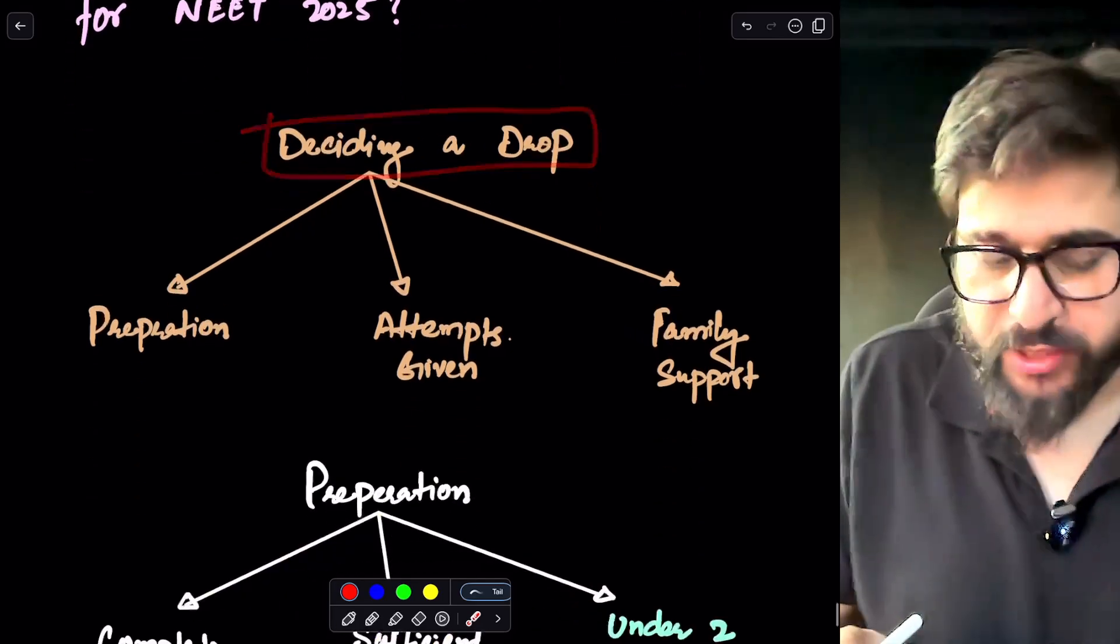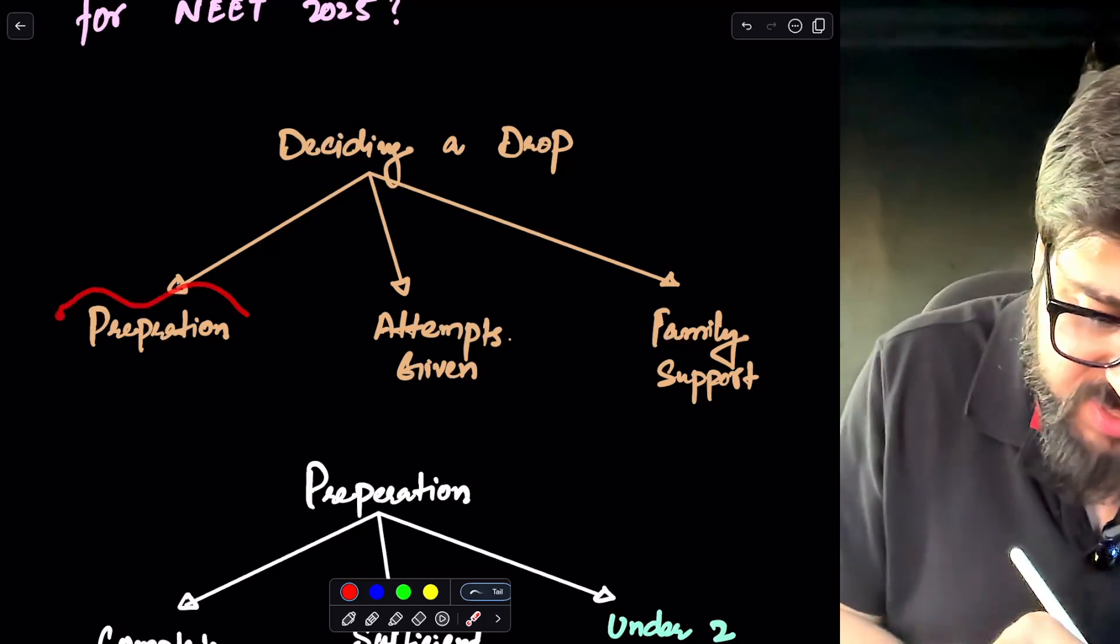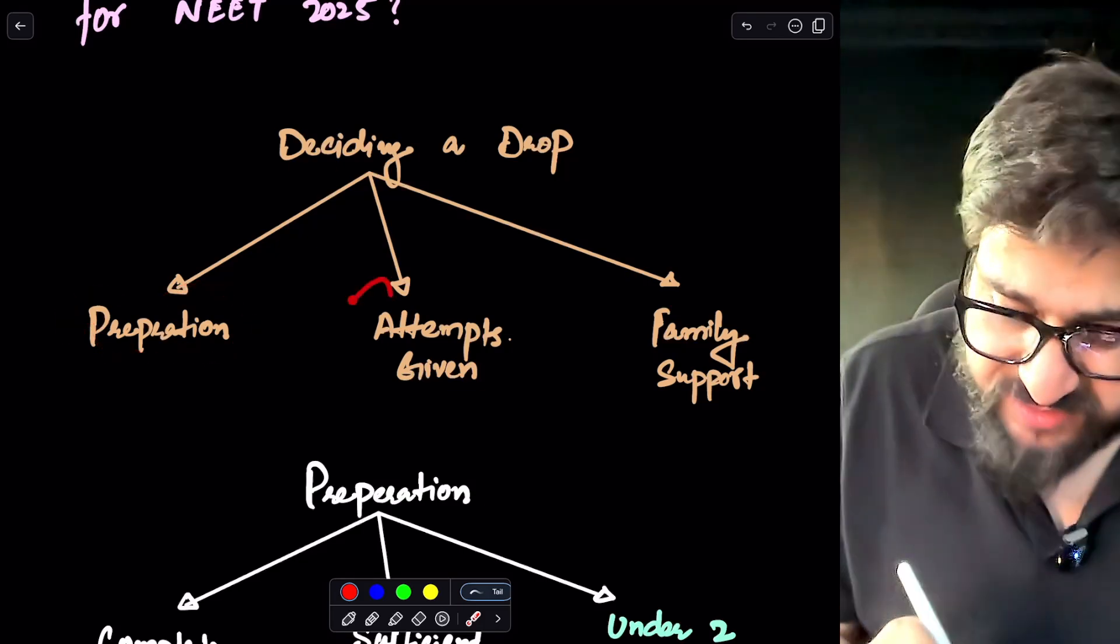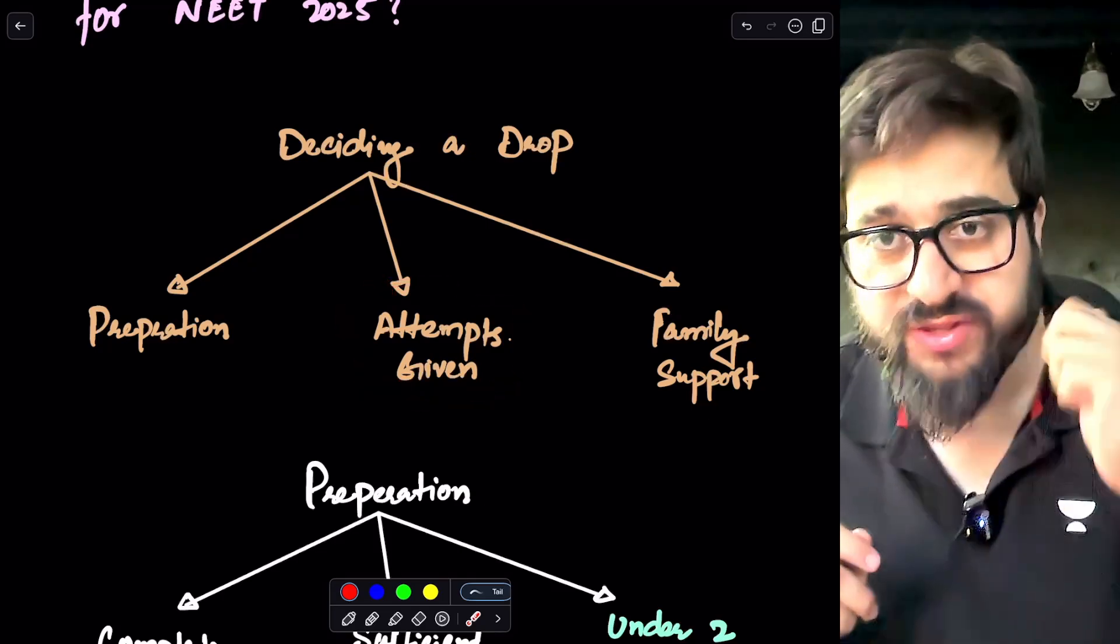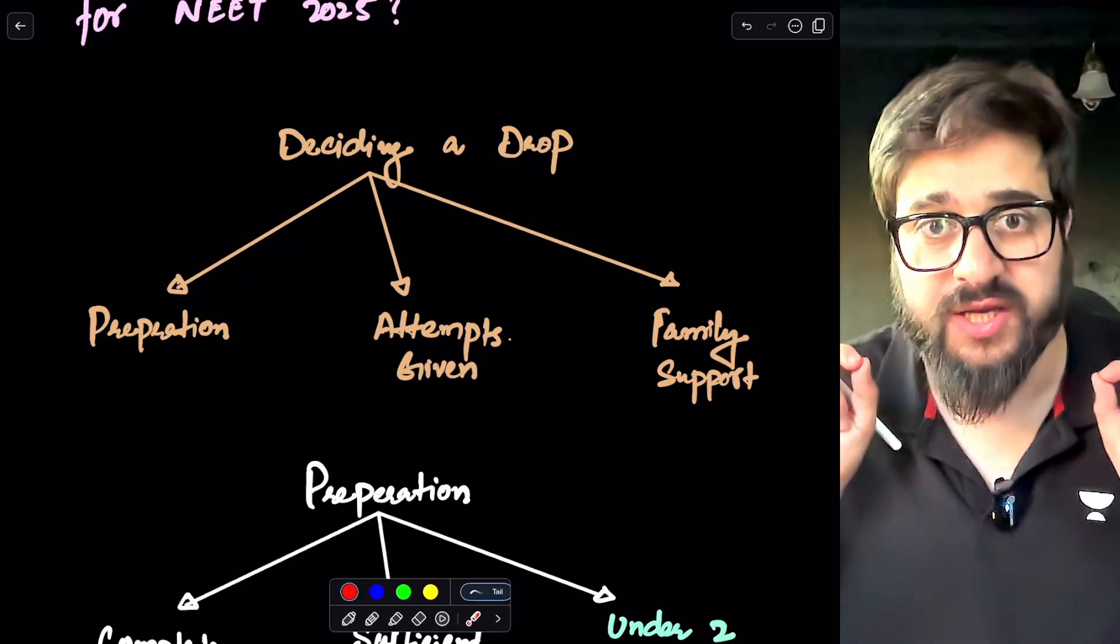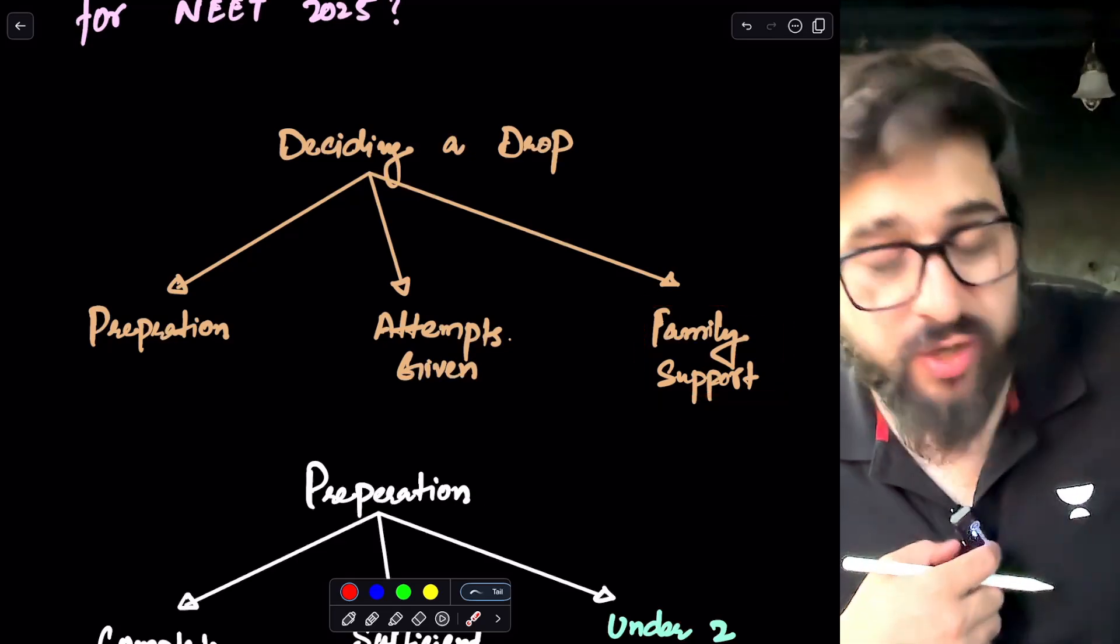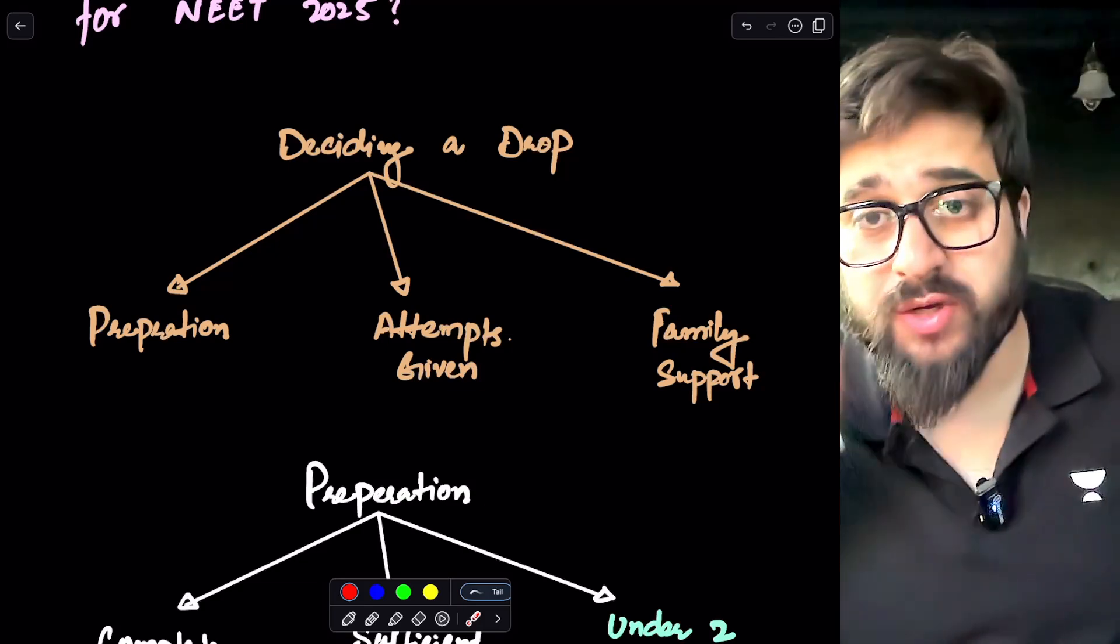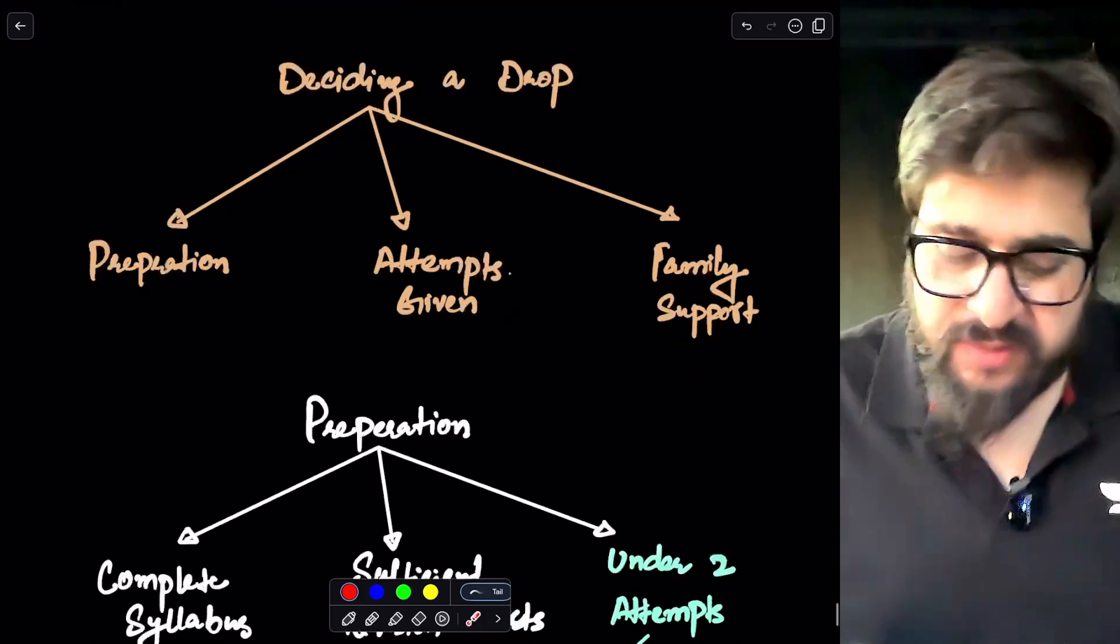Now listen to me very carefully. If you are deciding to take a drop, there are three things that you guys need to keep in your mind before taking the drop. The first thing is what is your preparation. The second thing is the number of attempts you have given. Have you given two attempts before? Have you given three attempts before? Have you given four attempts? This is based on the data. This is based on the logic. And then family support. There are students whose family says that you guys are supposed to crack the NEET in the two attempts only. Maximum, you have got two attempts. If not two attempts, you have to go for something else also.